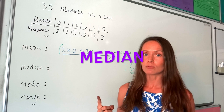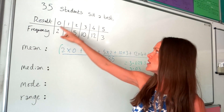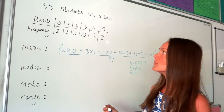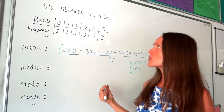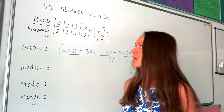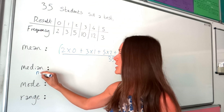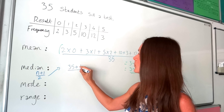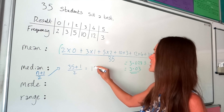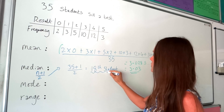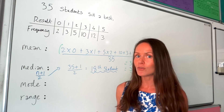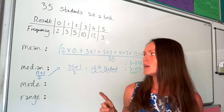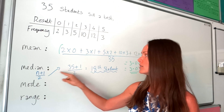The median is the middle result when students are ordered from smallest to largest — they're already ordered in the table. We have 35 students, which is an odd number. When you have an odd number of results, add one to the total and divide by two: 35 plus one equals 36, and 36 divided by two is 18. So we're looking for the 18th student. With an even number there are two middle values; with an odd number there's just one, found using this formula.